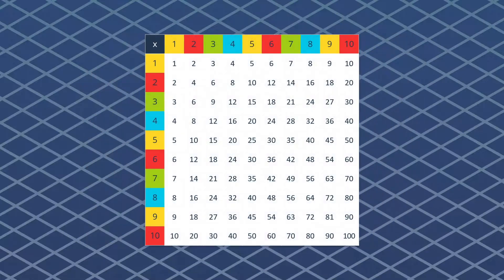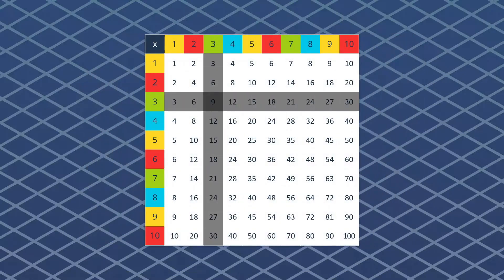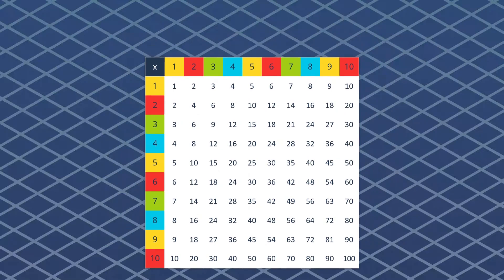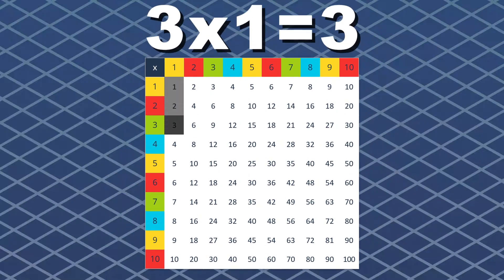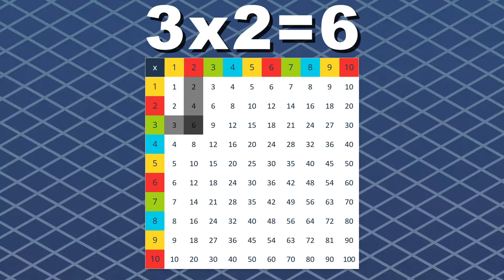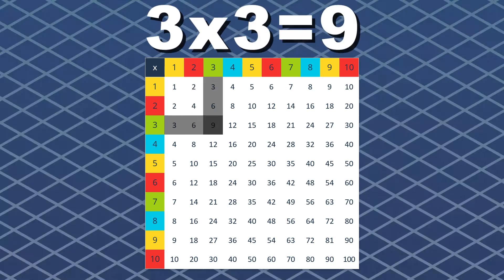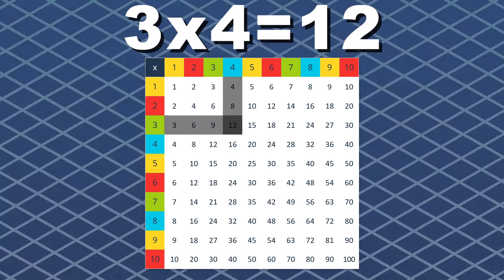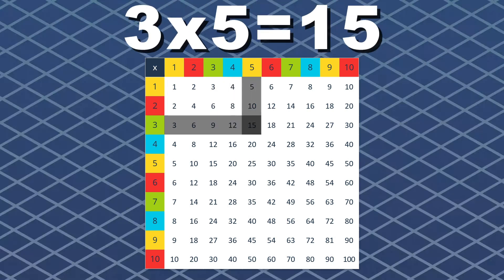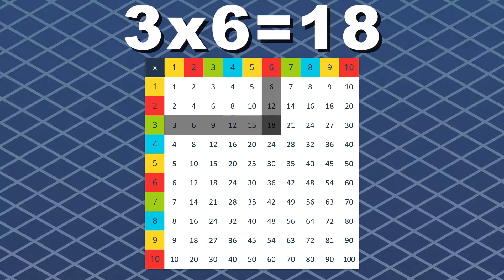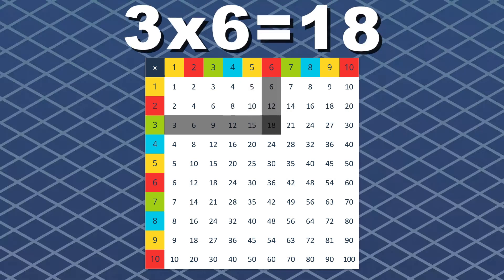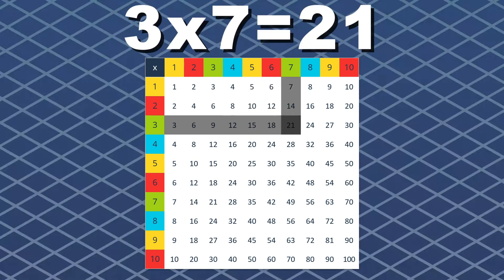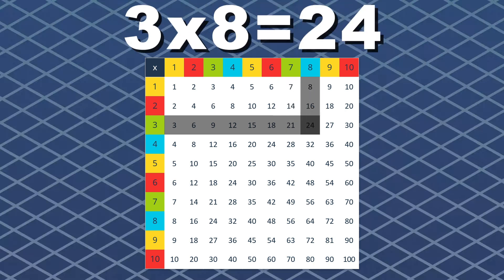Now let's multiply by 3 and see what we get. Use a times table in case you forget. 3 times 1 equals 3, 3 times 2 equals 6, 3 times 3 equals 9, 3 times 4 equals 12, 3 times 5 equals 15, 3 times 6 equals 18, 3 times 7 equals 21, 3 times 8 equals 24, and done.